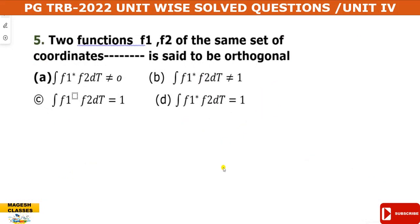Question number 5: two functions F1 and F2 of the same set of coordinates are said to be orthogonal. This is a property of wave functions — two sets of wave functions can be tested for orthogonality.